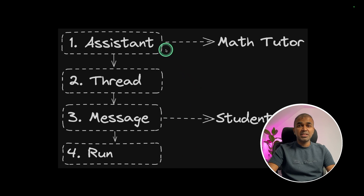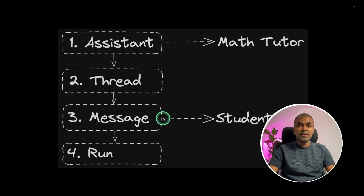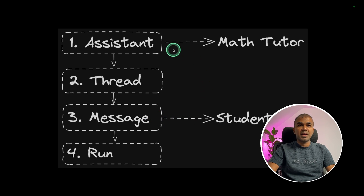The assistant is your ChatGPT bot — I'm going to configure this as a math tutor in this application. Next, you create a thread, which is like initiating a chat. The message could be from anyone; in our use case I'm using a student, so the student is going to ask a question to the math tutor. Finally, we are going to run this.